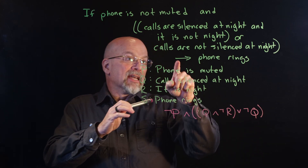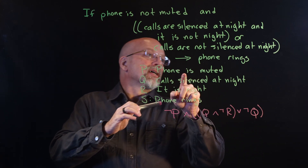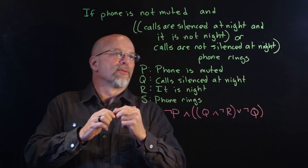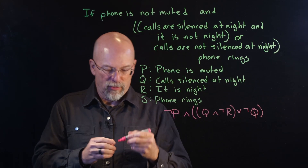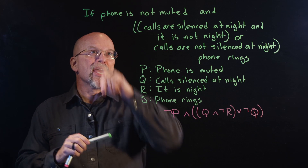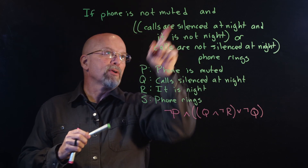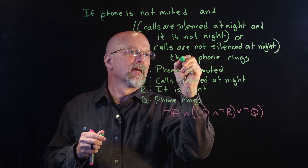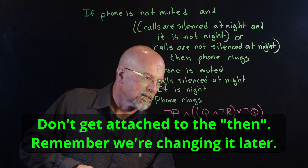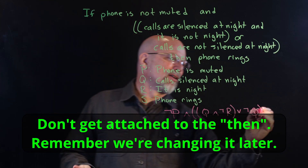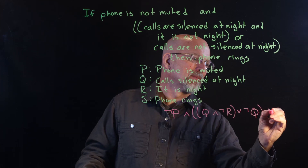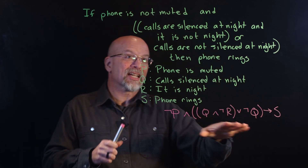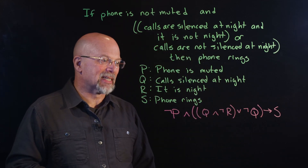I shouldn't have written that arrow there — I should have written it as a sentence: if phone is not muted and so forth, then phone rings. So that implies S. There is the expression that represents that sentence.